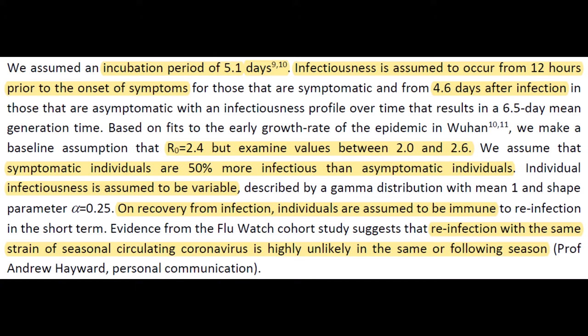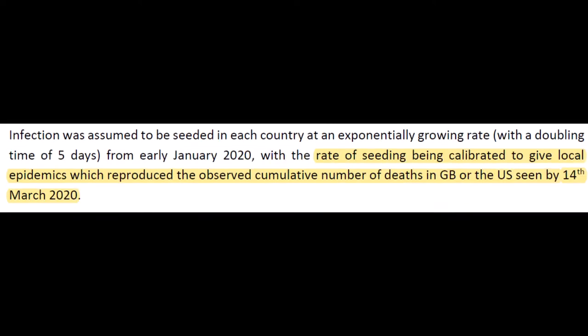We see R0 come up again, and they estimate it to be about 2.4, although they go anywhere from 2 to 2.6 in their models, meaning every person who gets infected is predicted to infect at least two others. They also assume that symptomatic people are about 50% more infectious than asymptomatic ones — coughing is a telltale sign of this disease and also a great way to spread it, so someone without a cough, even though infectious, is potentially less infectious. They further make allowance for variance in infectiousness and assume a recently infected person will not be able to contract the same strain again — they have immunity. The starting conditions were set so that the data we have about infections and deaths fit into the model nicely.